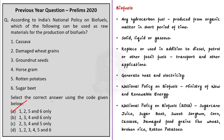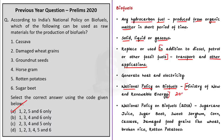Biofuel is a fuel produced from organic matter — a living or once-living material — in a very short period of time. The hydrocarbon fuel produced from such organic matter is called biofuel. The state of matter may be solid, liquid or gaseous. Biofuels can be used to replace or supplement diesel, petrol or other fossil fuels for transport and other applications, including generating heat and electricity.